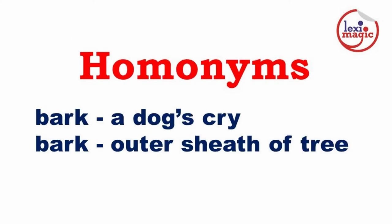Homonyms are words that have the same sound and spelling but different meaning. For example, the word bark has two meanings: one refers to a dog's cry, while the second meaning refers to the outer protective sheath of a tree's trunk.